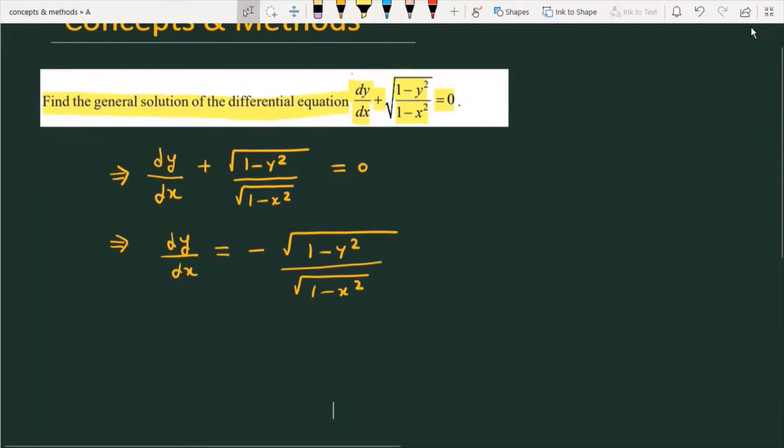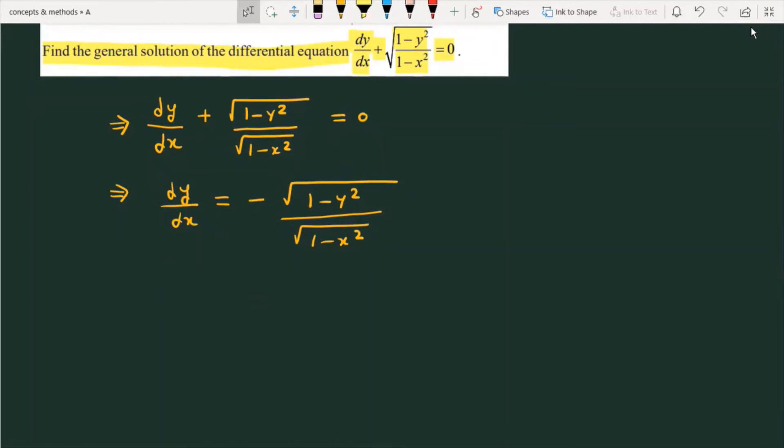If we check the format closely, then we can try the variable separation. So we can write dy/√(1-y²) = -dx/√(1-x²).